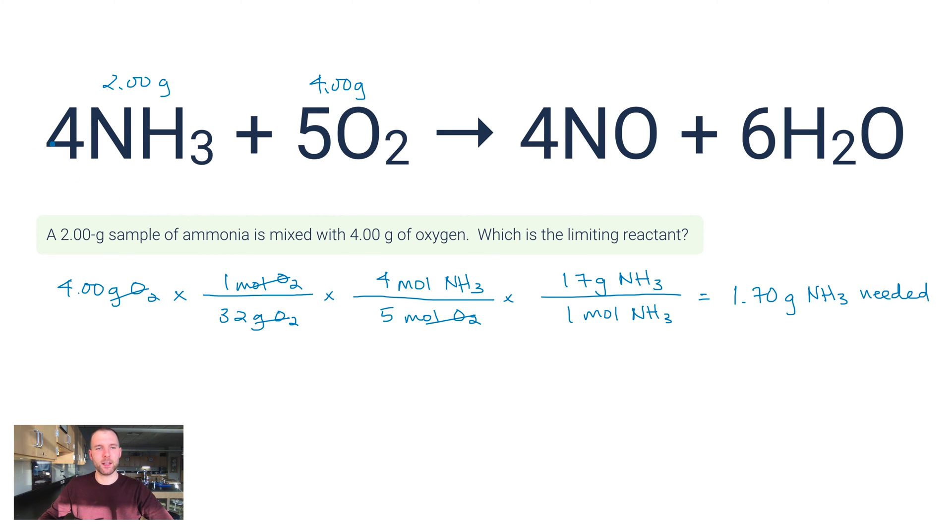Let's look at how much NH3 is available. 2 grams. That's more than 1.7 grams, and that's all I need to react all 4 grams of oxygen.